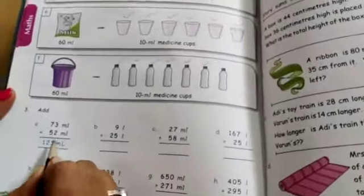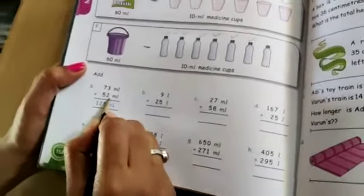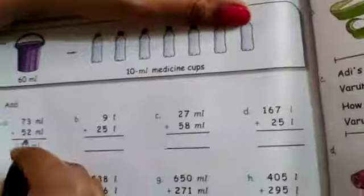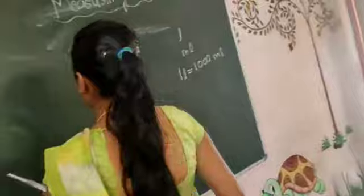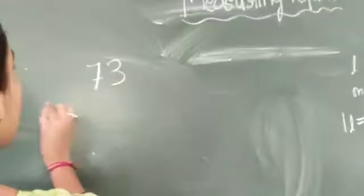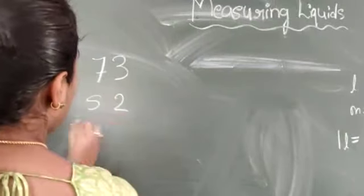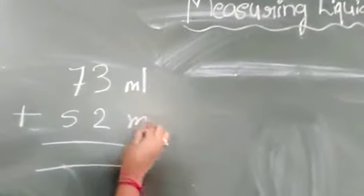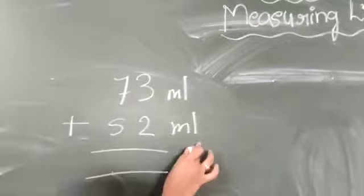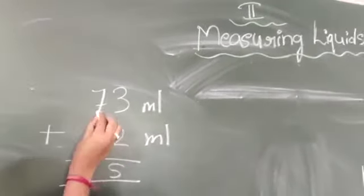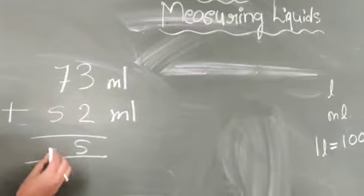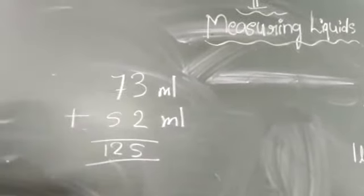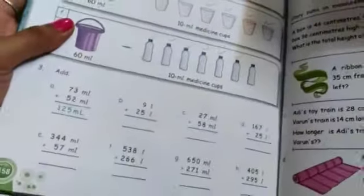Then here is subtraction, addition. Addition is there. See, addition in ml we have to add here. 73 plus 52, addition you know, but must and should you have to mention the ml. 3 plus 2, 5. 7 plus 5, 125 ml. Like that only you have to do.